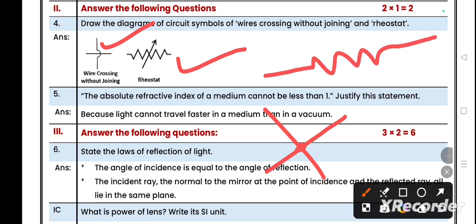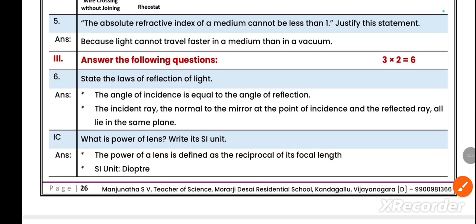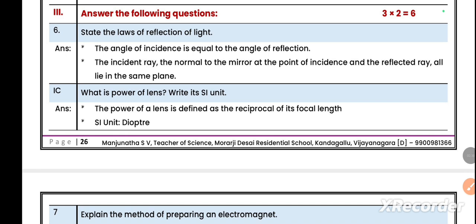Question number five: the absolute refractive index of a medium cannot be less than one. Justify this statement. Because light cannot travel faster in a medium than in a vacuum, that's why it cannot be less than one.